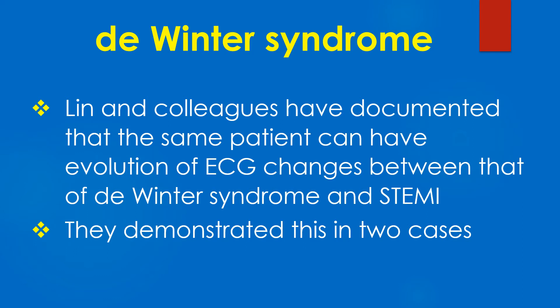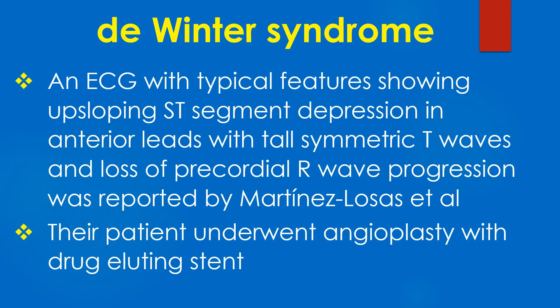Lin and colleagues have documented that the same patient can have evolution of ECG changes between that of Devinder syndrome and STEMI. They demonstrated this in 2 cases. An ECG with typical features showing upsloping ST segment depression in anterior leads with tall symmetric T waves and loss of precordial R wave progression was reported by Martin A. Lozas and associates. Their patient underwent angioplasty with drug eluting stent.